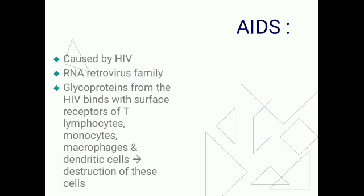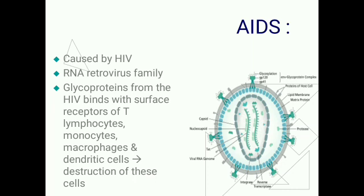The next immunodeficiency disorder is AIDS, acquired immunodeficiency syndrome, caused by human immunodeficiency virus. This virus is an RNA retrovirus. In the nucleus it has RNA, and on the cell membrane it has glycoprotein receptors. These glycoproteins bind with surface receptors of T lymphocytes, monocytes, macrophages, and dendritic cells, resulting in destruction of these cells.